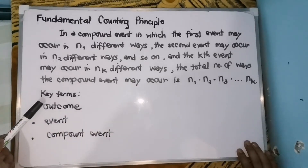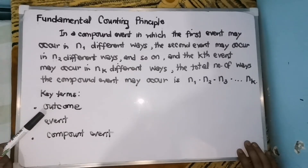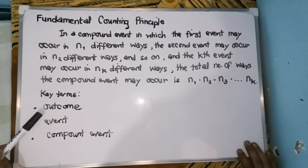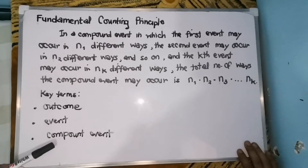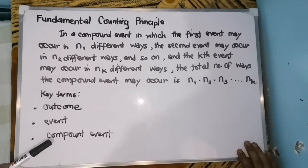Here are our key terms. The first one is outcome — when the combinations of items or a succession of events are considered, each result is called an outcome. An event is a subset of all the possible outcomes. A compound event occurs when an event is composed of two or more outcomes, such as flipping a coin followed by flipping another coin.